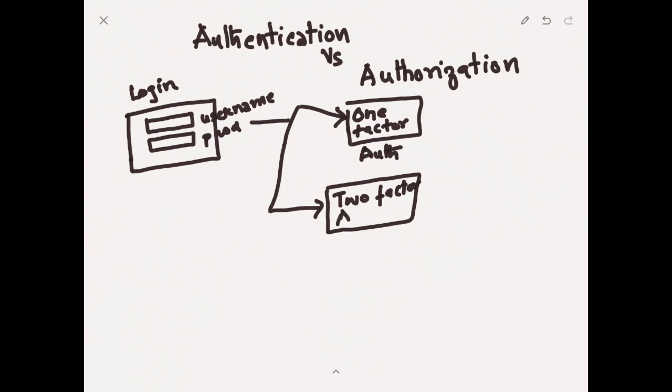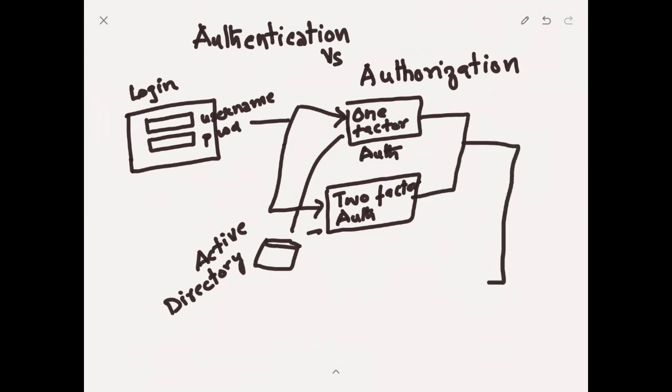So once you are authenticated, the next step is to find out what are you authorized for. Generally, authentication is done against Active Directory. Active Directory stores your username, password, and some other attributes, maybe your phone number. So once you pass the authentication check, next is to find out what you are authorized for.